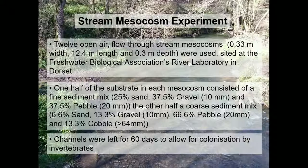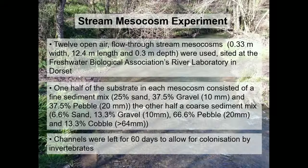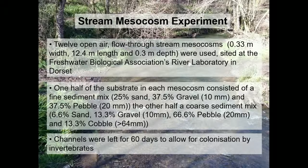Essentially, what I'm interested in is: when a fine sediment pulse enters the mesocosm, what do the invertebrates do? Do they drift off further downstream, or do they migrate vertically downwards into the streambed? And once the fine sediment is deposited, do they drift downstream or migrate vertically down? I'm very interested to see the effect of substrate type on this response — with a coarse substrate providing greater interstitial space, invertebrates may be able to use the hyporheic zone to escape from fine sediment deposited on the surface.